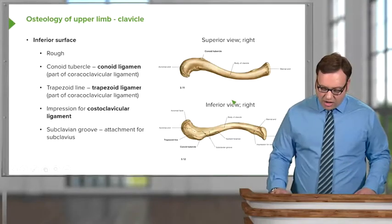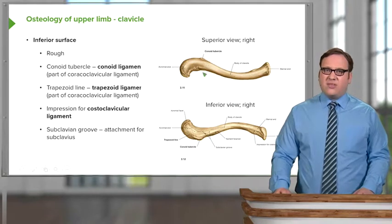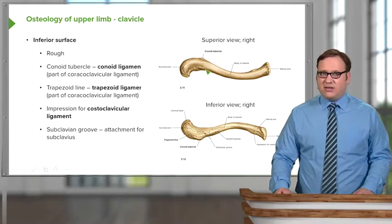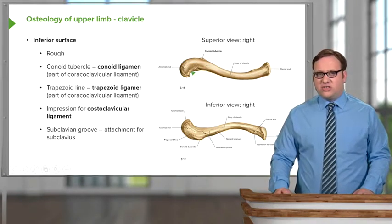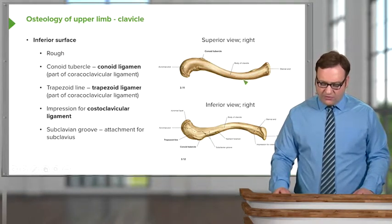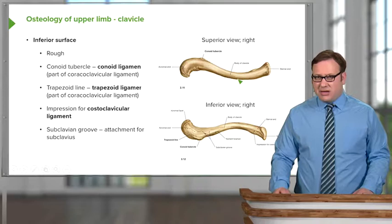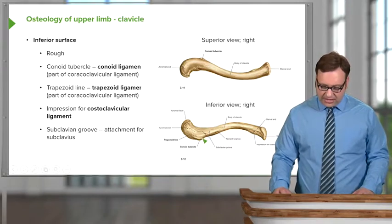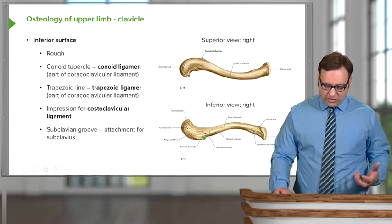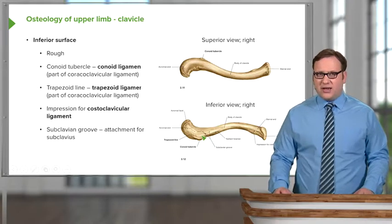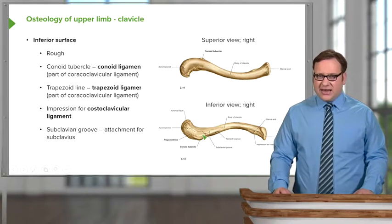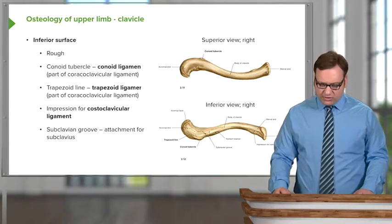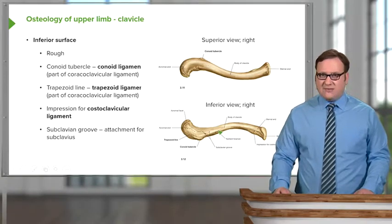To summarize, here is an overview of the right clavicle. It has a smooth superior surface, which is convex anteriorly for the medial half and concave anteriorly for the lateral half. The inferior surface is roughened and includes the conoid tubercle, the trapezoid line, the costoclavicular ligament impression, and a groove for the subclavius muscle.